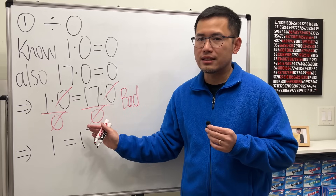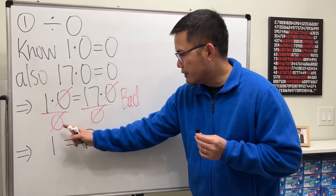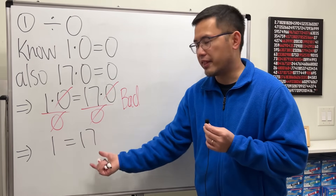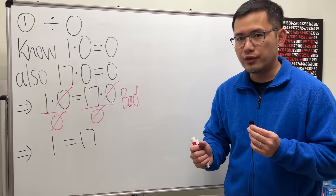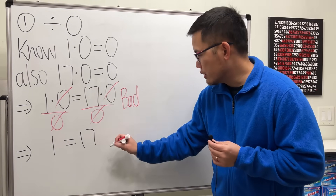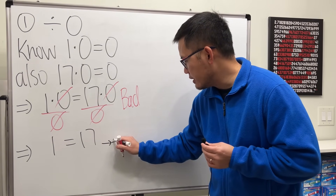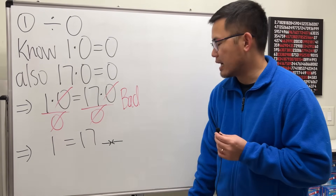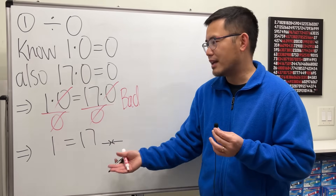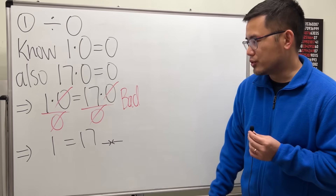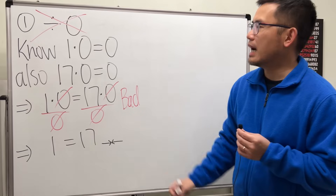By the way, whenever you reach a contradiction — something that doesn't make sense — here's a notation for that: you can draw an arrow going one way and then another arrow going the other way. Contradiction. That means you have shown what you wanted to show. So this is not okay.